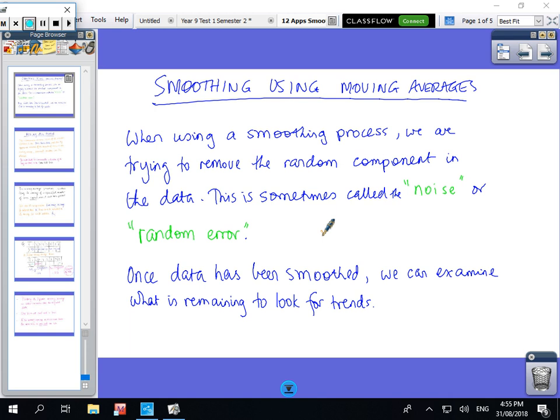When using a smoothing process we're trying to remove the random component in the data, and sometimes this randomness is called the noise or random error. Once data has been smoothed we can examine what's left over to look for trends. It's just a way of getting rid of some of the data that's a little bit not quite right.